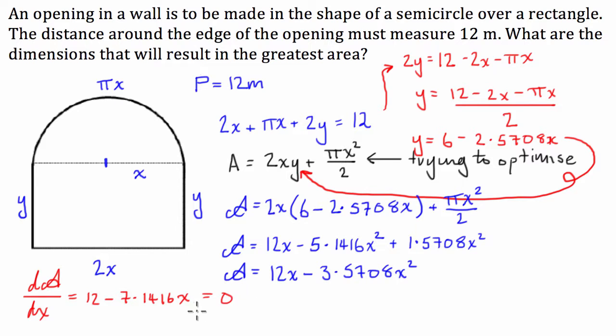So we're then going to solve for x, so I could move the 7.1416 to the right, and then divide it by 7.1416. So I'm going to have x is equal to 12 divided by 7.1416, which is equal to 1.68.